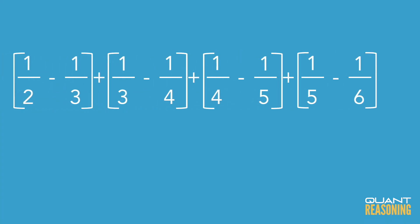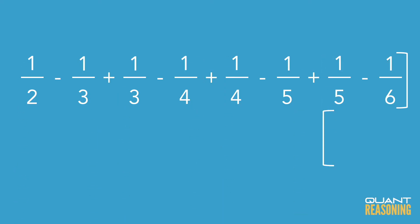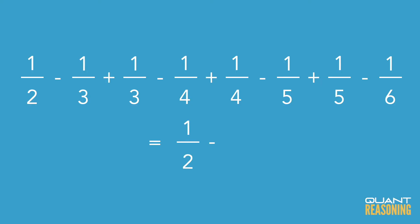This one is kind of a funny one because in between all the parentheses all we have is plus signs. So the parentheses are kind of redundant — they don't matter, they don't mean anything, they don't make any difference. And if we get rid of those parentheses it becomes fairly obvious that a lot of this just cancels out, and all you're left with in the end is a half minus one sixth.